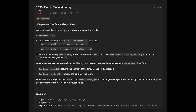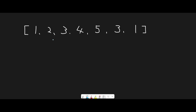Hey everyone, today we are going to solve the LeetCode question: Find in Mountain Array. The input array is partially sorted from index 0 to the peak, and from peak plus one to the last index.